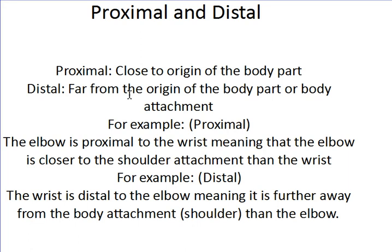Now looking at it the other way: the wrist is distal to the elbow, meaning it's further away from the body attachment — the shoulder. Hold your arm out and look at your wrist and your elbow. Which one is further away from your body? It'll be the wrist, so that means it's distal.